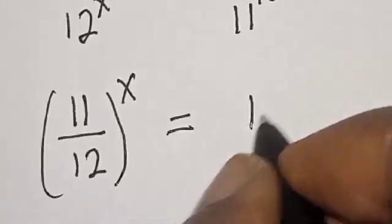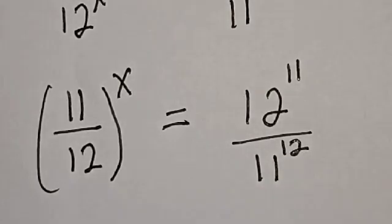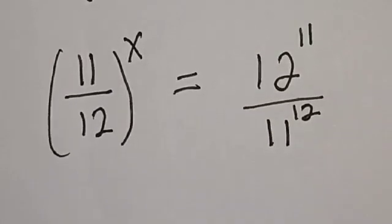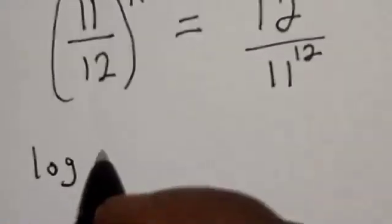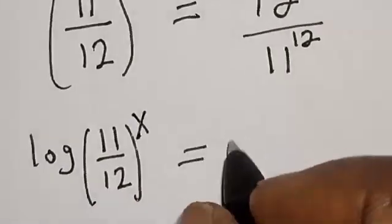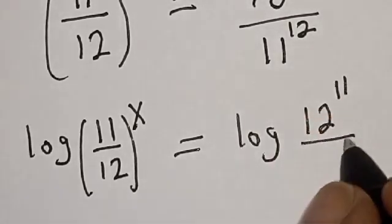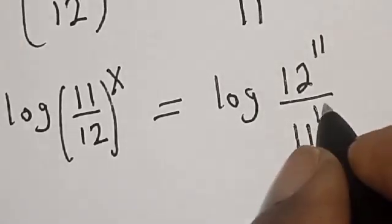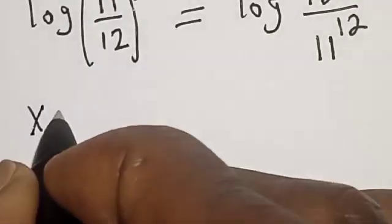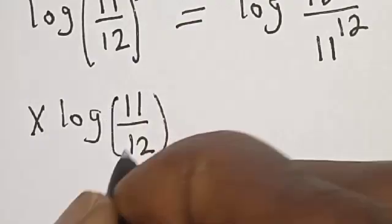This is equal to 12 raised to power 11 divided by 11 raised to power 12. Now let's take the log of both sides because we are looking for the value of s. Log of 11 divided by 12 raised to power s is equal to log of 12 raised to power 11 divided by 11 raised to power 12. Then s times log of 11 divided by 12 is equal to log of 12 raised to power 11 divided by 11 raised to power 12.